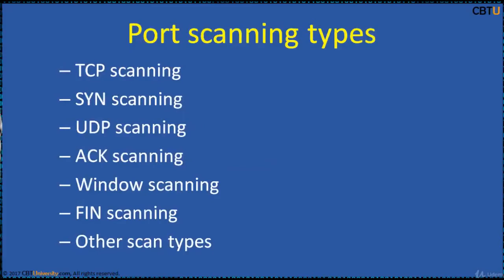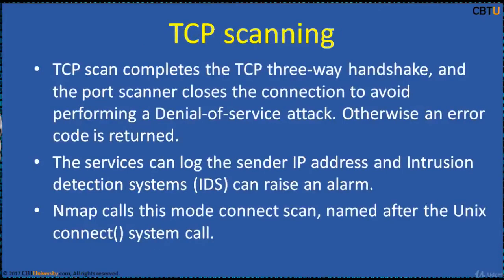The port scanning types include TCP scanning, SYN scanning, UDP, ACK, Window scanning, FIN scanning, and other scan types as well. TCP scan completes the TCP three-way handshake and the port scanner closes the connection. These services can log the sender's IP address and IDS/IPS systems can raise a log. Nmap calls this mode connect scan, named after the Unix connect system call.